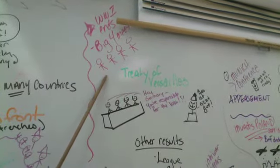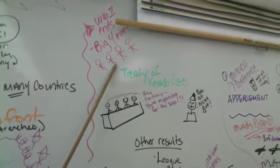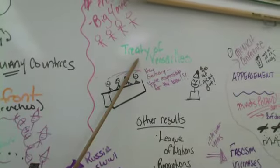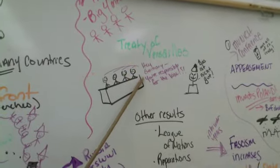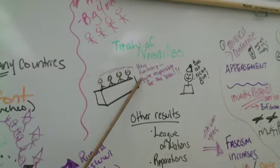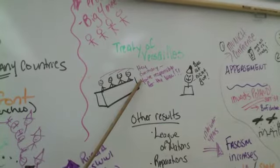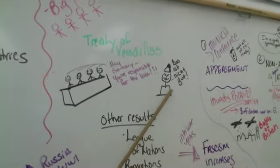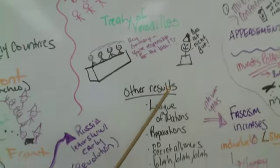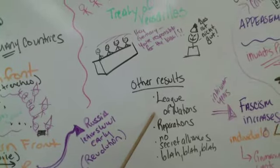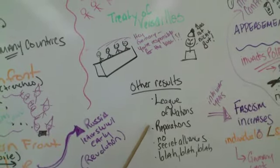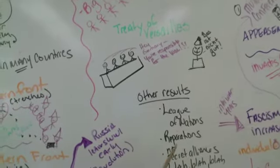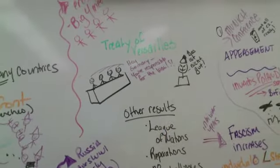World War One finally ends and the Big Four meet — the US, the UK, Italy, and France. The Treaty of Versailles gives the terms of the end of the war. Germany is told they're responsible for the war — that's the war guilt clause — and Germany was not happy about that at all. Other results included the League of Nations, which was Wilson of the United States' idea, one of his 14 points. Germany also had to pay reparations, demobilize, and there couldn't be secret alliances.